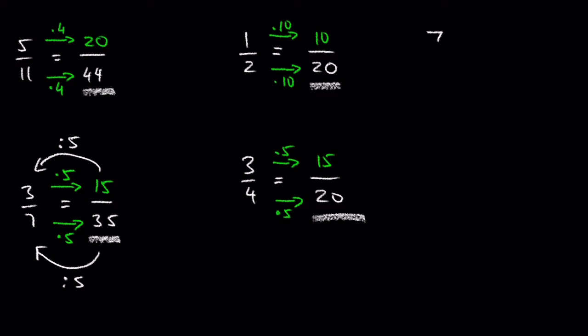Change 7 over 8 to a fraction with 32 in the denominator. Feel free to pause the video and try it by yourself. 8 times what is 32? 8 times 4 is 32, so 7 times 4 is 28.